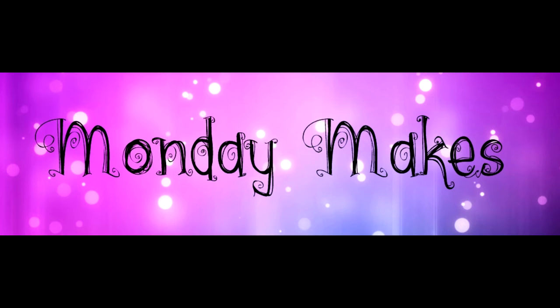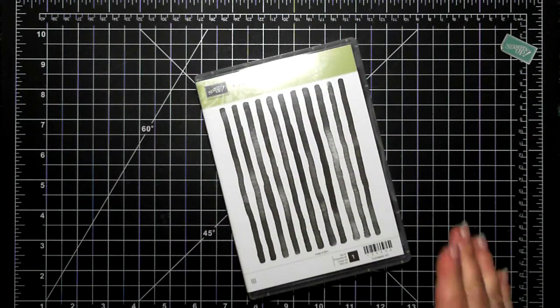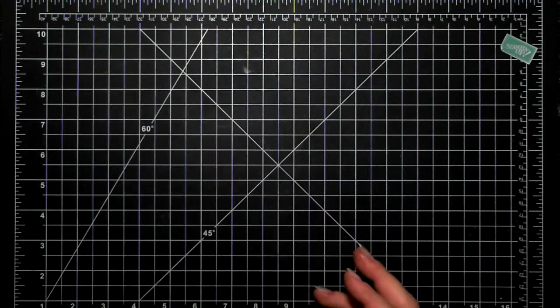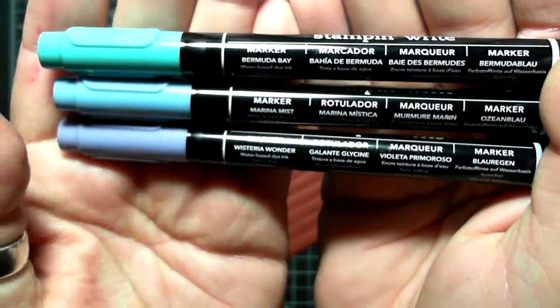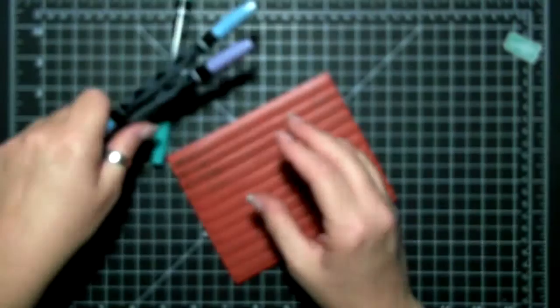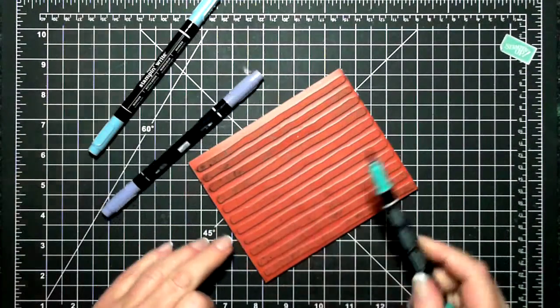Hi everyone, it's Suzanne here. Thanks for joining me for another Monday Makes video. Today I'm doing a thank you card using the brush strokes background stamp by Stampin' Up. I'm also using markers today: the Bermuda Bay, Marina Mist, and Wisteria Wonder.